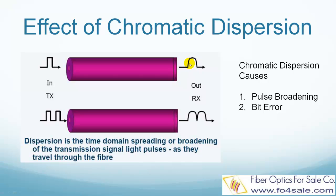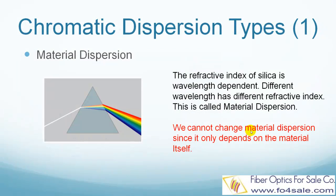Looking at the bottom part of the picture: two perfect signals start at the beginning, but at the end, since both pulses get wider because of chromatic dispersion, they overlap each other. If the overlap is too big, the detector may not be able to recognize these two signals and you get an error. So chromatic dispersion causes pulse broadening and bit errors.